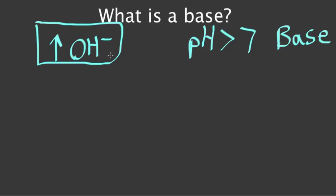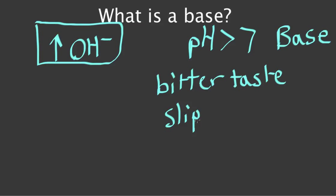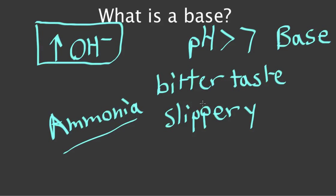A few properties of bases are that they have a bitter taste and feel slippery or soapy. An example of this would be the household cleaner ammonia. Ammonia feels slippery because it's a base. So, bitter taste, slippery.